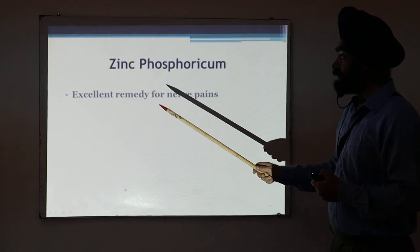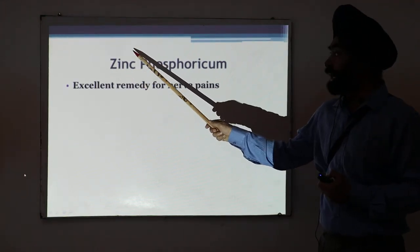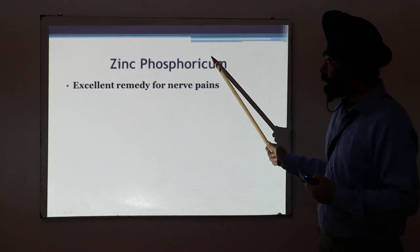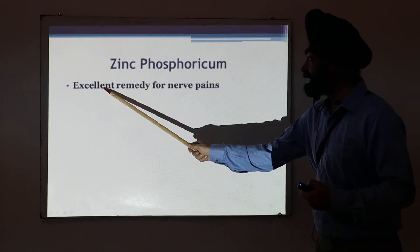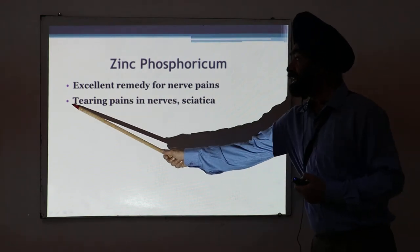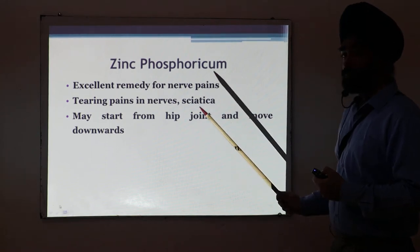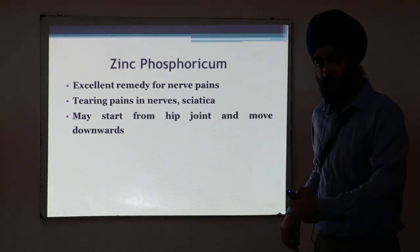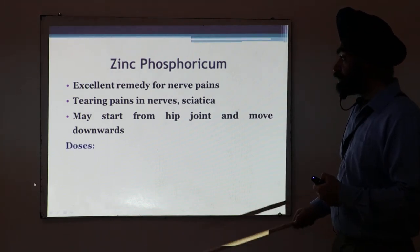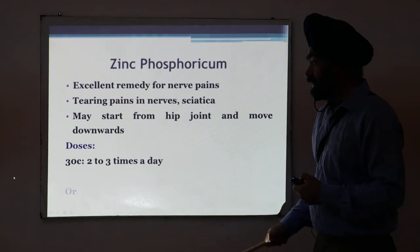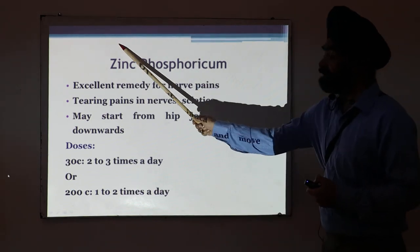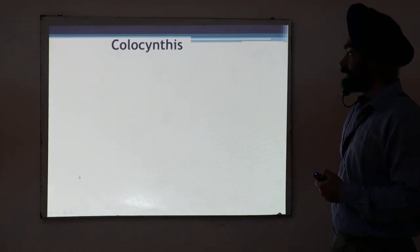The first medicine I want to discuss is Zinc Phosphoricum — a very important nerve remedy. Zinc is required for the nerves, and combined with phosphorus, Zinc Phosphoricum is an excellent remedy for nerve pains, particularly sciatica. The pain is a tearing, intolerable pain that starts from the hip joint and moves downward toward the thigh, knee, or foot. The dose is 30C or 200C, two to three times a day.